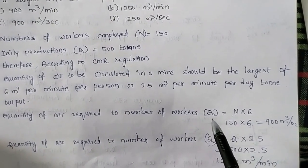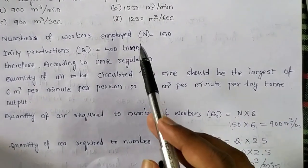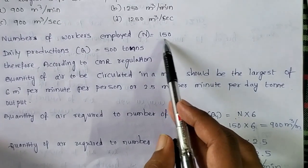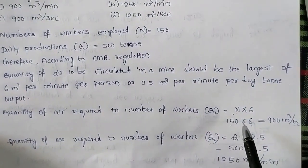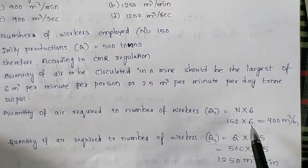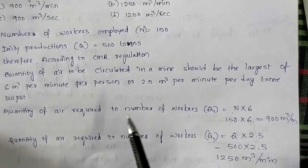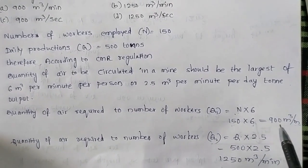The quantity of air required to number of workers be Q1. So N, the total number of workers, is 150. Here the 150 is multiplied with 6. We will get the quantity of air required to number of workers, which is 900 meter cube per minute.